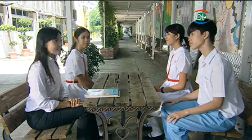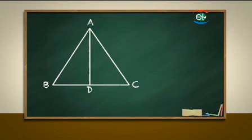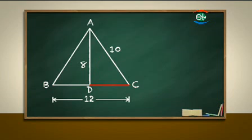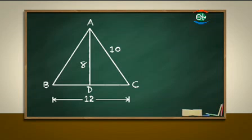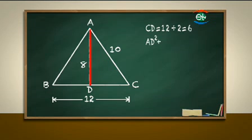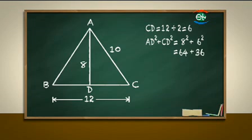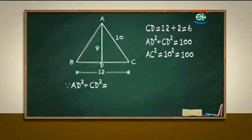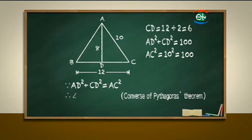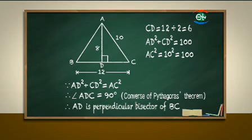In the figure, AC = 10, BC = 12, and AD = 8. D is the midpoint of BC. Can you prove AD is the perpendicular bisector of BC? To prove this, we need to show angle ADC = 90°. In triangle ACD, D is the midpoint of BC, so CD = 12 ÷ 2 = 6. AD² + CD² = 8² + 6² = 64 + 36 = 100. AC² = 10² = 100. Since AD² + CD² = AC², by the converse of Pythagoras theorem, angle ADC = 90°, so AD is the perpendicular bisector of BC.